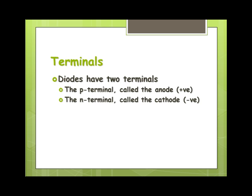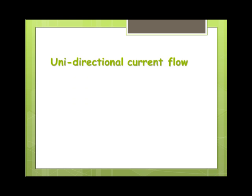Now diodes have two terminals. We have a P terminal which is called the anode, it's a positive end, and we have the N terminal called the cathode which is the negative end. They are unidirectional in their current flow so they only allow the current to flow in one direction and this is what we call forward bias. If it's in reverse bias it will not allow current to flow under normal voltages.